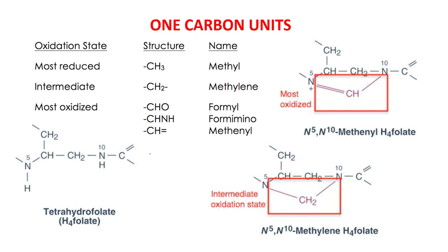In the one-carbon metabolism, we have one-carbon units like methyl, methylene, formimino, and methanol. They attach to tetrahydrofolate at the N5 or N10 site, or they can attach to both N5 and N10. For example, N5,N10-methanol tetrahydrofolate attaches to both N5 and N10. The same is seen in methylene tetrahydrofolate.